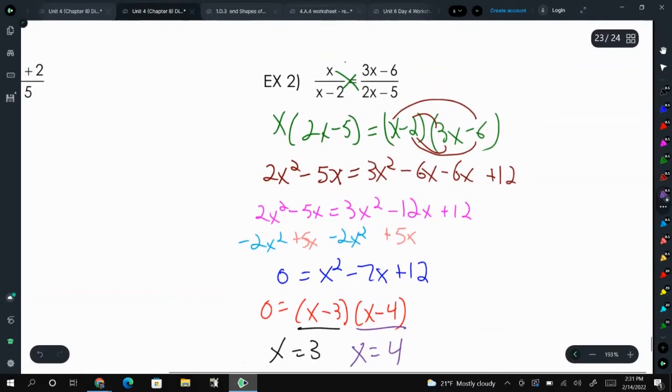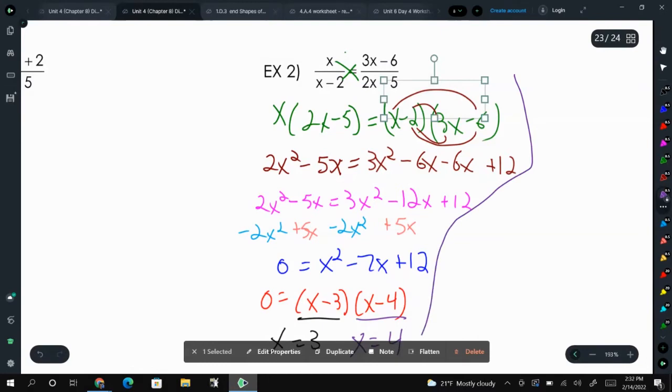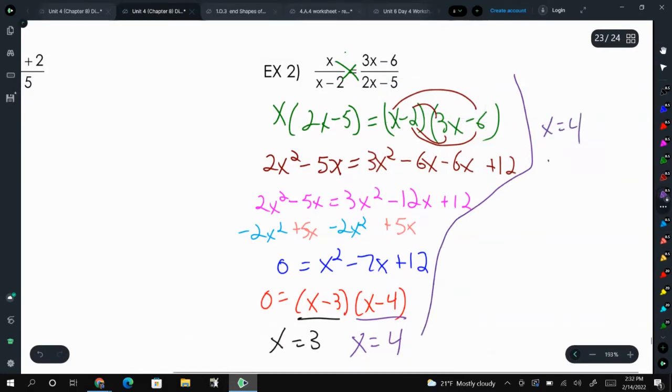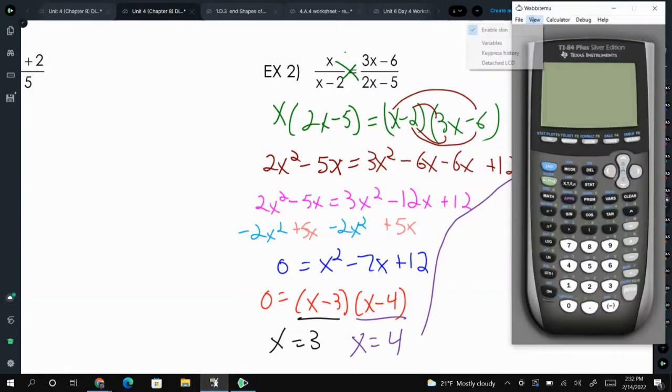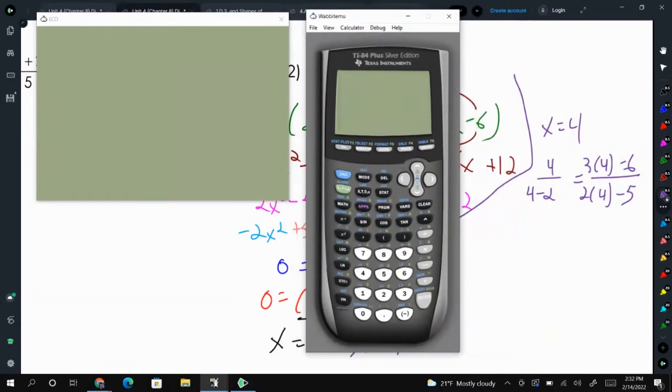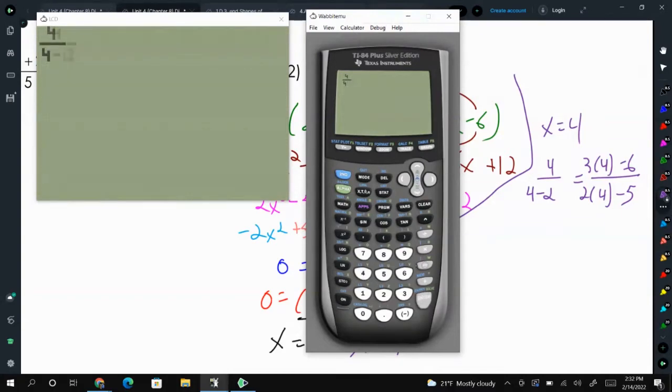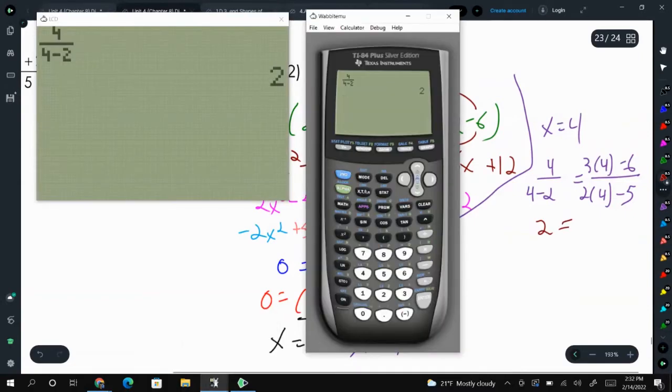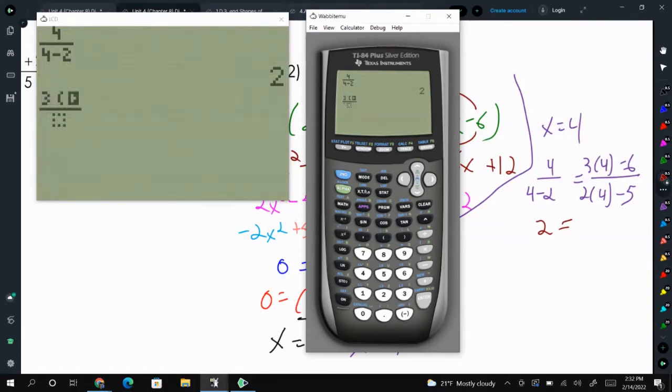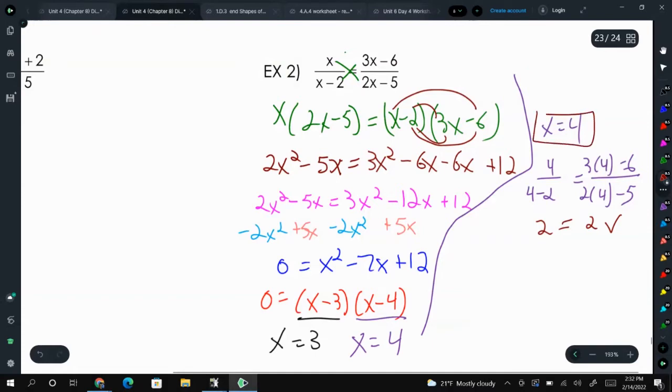And then we can check these. So 4 over 4 minus 2, does that equal 3 times 4 minus 6 over 2 times 4 minus 5? So in our calculator, we're going to create those fractions. Alpha y equals 4 over 4 minus 2. We hope to get 2 on the other side. 3 times 4 minus 6 over 2 times 4 minus 5, and we get 2 as well. So that works out. So x equals 4 is a solution.